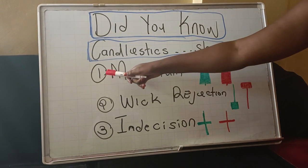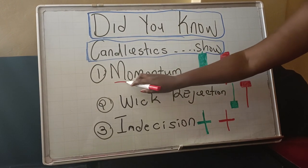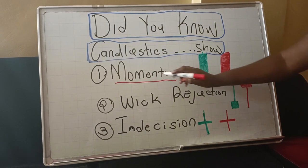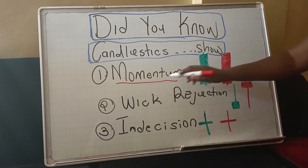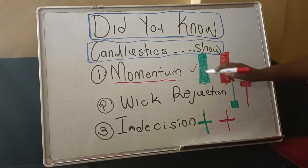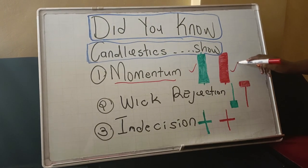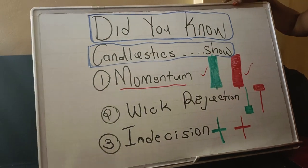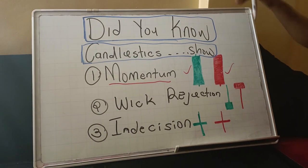The number one thing that candlestick shows is momentum. Every time the candles are printing on your chart, they are showing momentum. And momentum here, I have really given you an idea of what momentum is. Momentum is those huge, big volume candles.